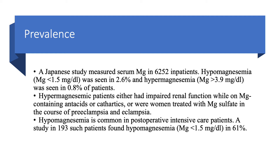Another study, a Japanese study, measured serum magnesium in 6,252 inpatients. Hypomagnesemia, defined as less than 1.5 milligrams per deciliter, was seen in 2.6 percent. Hypermagnesemia, defined as magnesium over 3.9, was seen in 0.8 percent of patients. Hypermagnesemic patients usually had impaired kidney function or were women given magnesium sulfate for preeclampsia and eclampsia. If someone has impaired kidney function and is given antacids or cathartics containing magnesium, you will truly see hypermagnesemia.